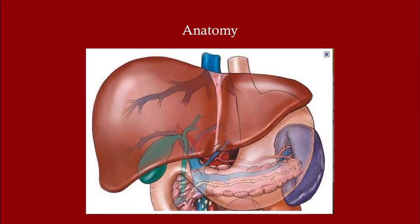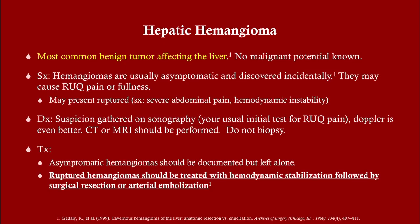Hepatic hemangiomas are the most common benign tumor affecting the liver. They don't turn into cancer. They're usually asymptomatic and discovered incidentally — for example, when getting a right upper quadrant ultrasound for biliary colic or right upper quadrant pain, you find this mass even if it's not the cause of the problem. It can rupture, but it's not as likely to rupture as the hepatic adenoma. Diagnosis is typically gathered on sonography; Doppler can be useful as well.